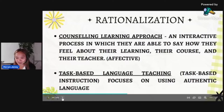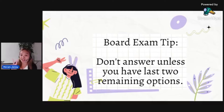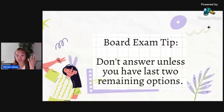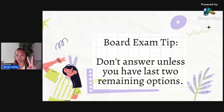Here's a really good board exam tip: don't answer unless you have only the last two remaining options. With four choices A, B, C, D, you have a 25% chance of getting the right answer. To make it 50%, you must eliminate two options first before you choose. That way you have a 50% chance of choosing the correct answer.